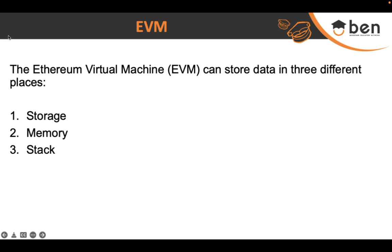All three places reside within the EVM, but each has its own features and different gas consumption. Depending on our need, we sometimes have the power to select whether we want to store particular data in storage, memory, or stack — but for some cases the rules are fixed. Today we'll see how the data we write in our smart contract is stored on the EVM machine.